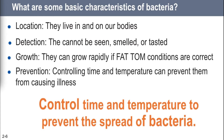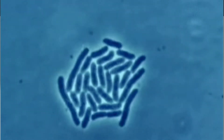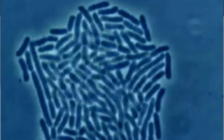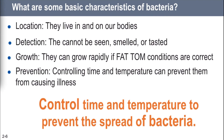Bacteria live in and on our bodies; they're practically everywhere. You can't see them, smell them, or taste them. The thing about bacteria is they grow really fast if FAT TOM conditions are correct — they'll double in number every 20 minutes. To stop them, there's only one way: control time and temperature. You can't control anything else about how they grow.